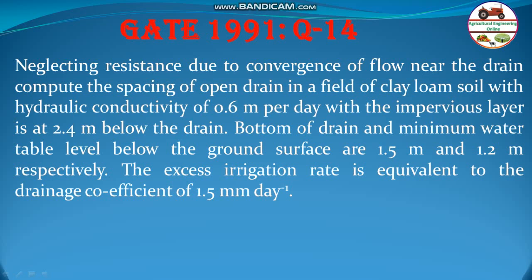Neglecting resistance due to convergence of flow near the drain, compute the spacing of open drain in a field of clay loam soil with hydraulic conductivity of 0.6 meter per day with impervious layer at 2.4 meter below the drain. Bottom of the drain and minimum water level below the ground surface are 1.5 meter and 1.2 meter respectively. Excess irrigation rate is equivalent to the drainage coefficient which is given 1.5 millimeter per day.